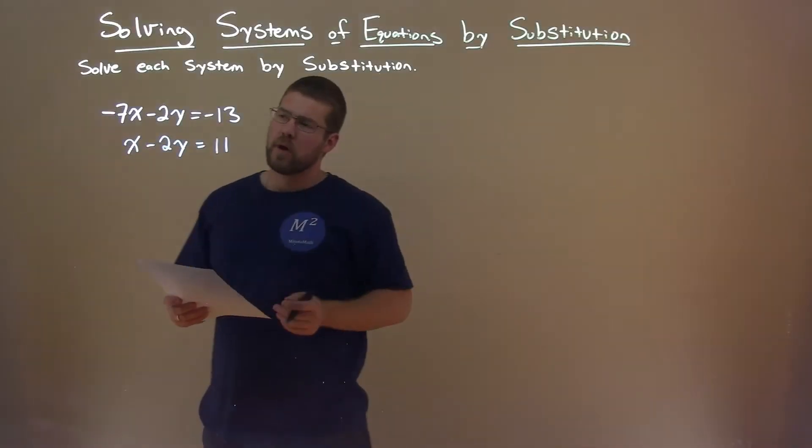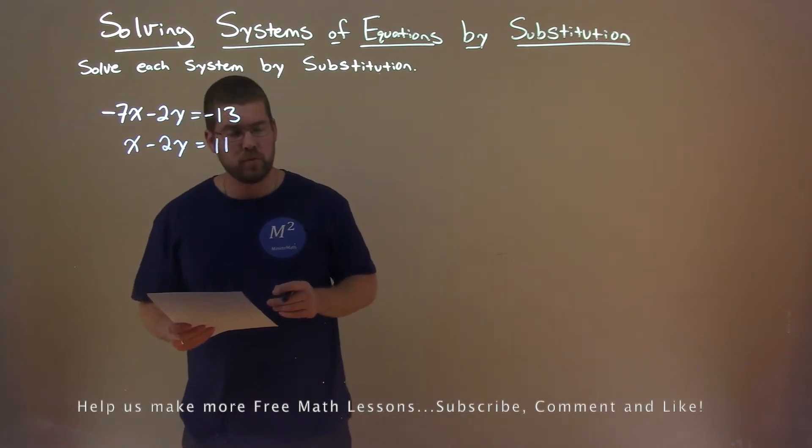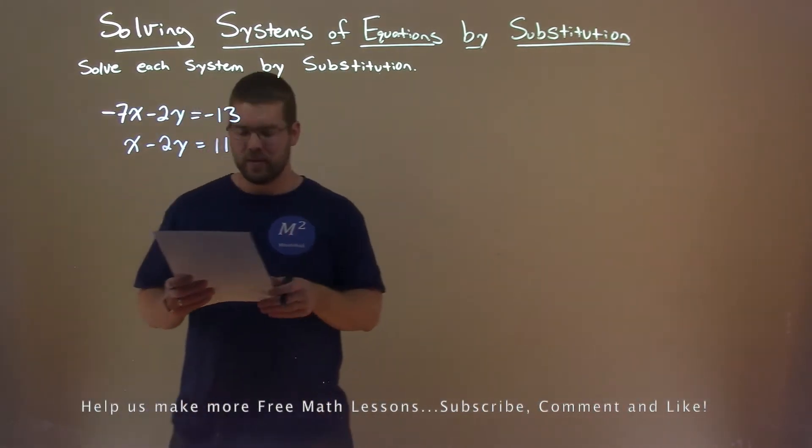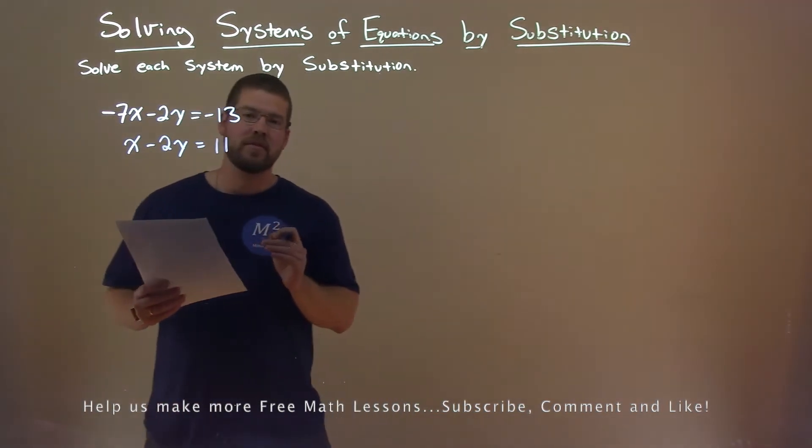We're given this problem here: minus 7x minus 2y equals negative 13, and x minus 2y equals 11. And we want to solve this system by substitution.